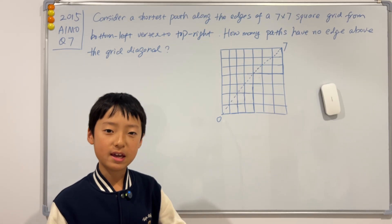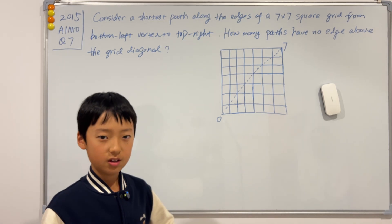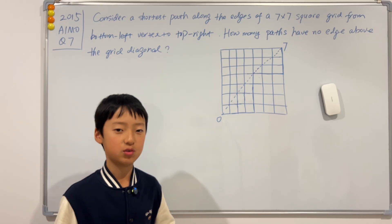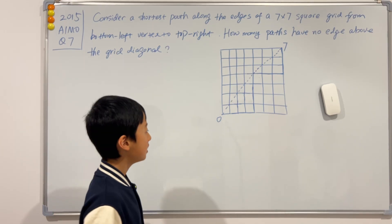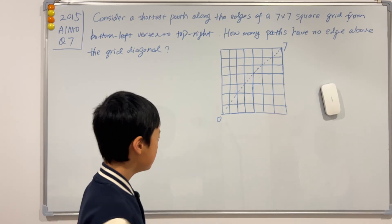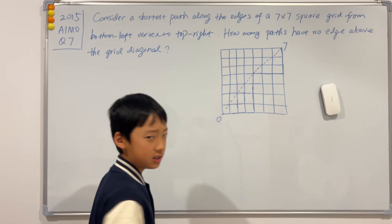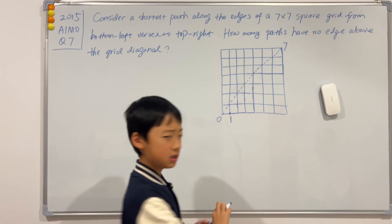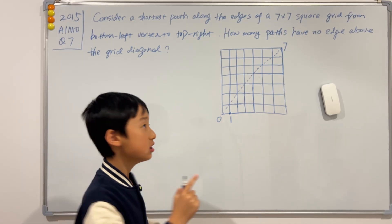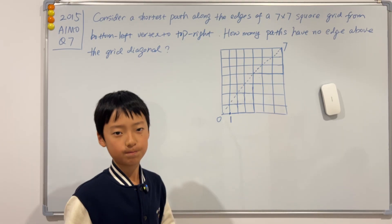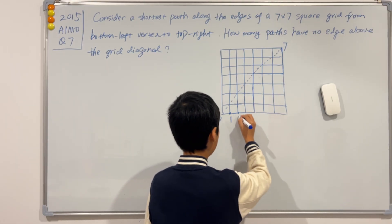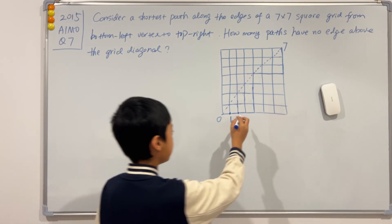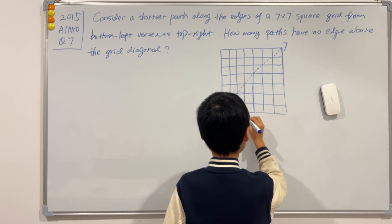The third way is just counting, and only primary school students need to understand this method. From 0 to the first point along the bottom edge, there is 1 way — you cannot go backwards because this is the shortest path. Similarly, for all points along the bottom row and the left column, there is also 1 way each.